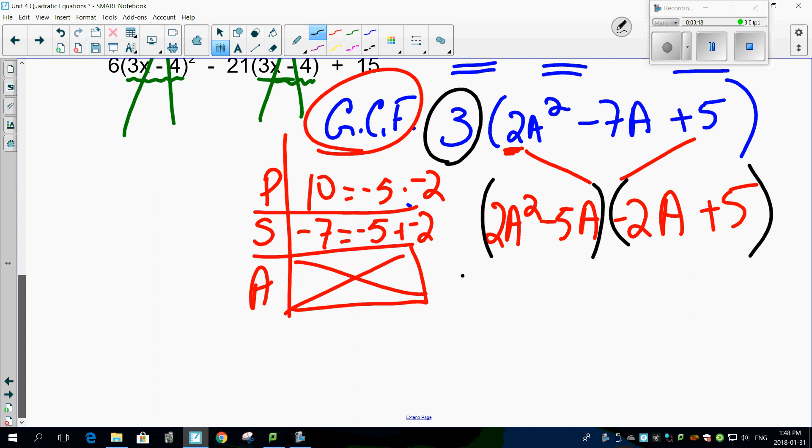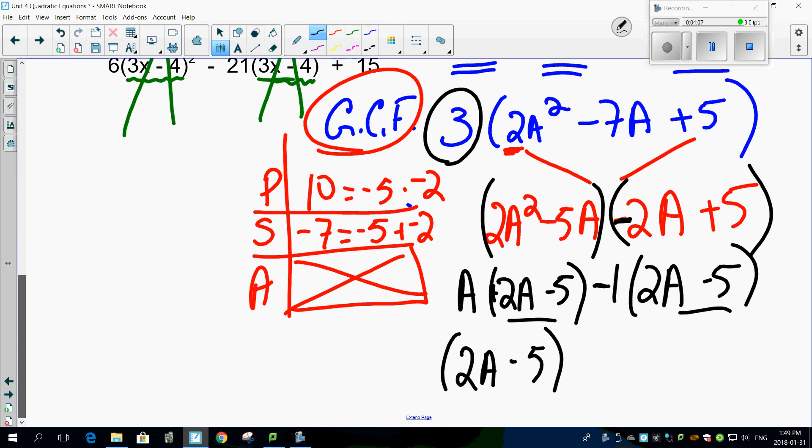So I can only take an A out here, giving you 2A minus 5. This is a negative. That's a positive. So that means I have to take a negative 1 out, giving me 2A minus 5. There's my like terms. 2A minus 5. And of course, that's gone. A minus 1. Now, here's where you put the 3 back in.